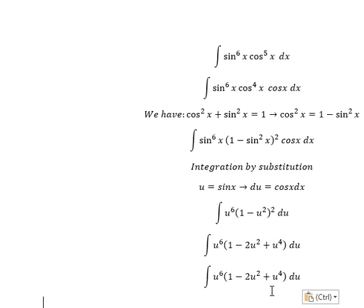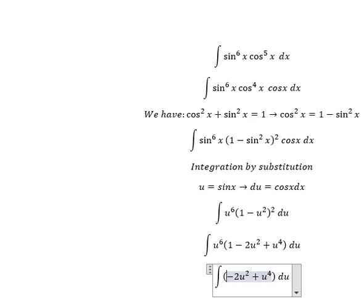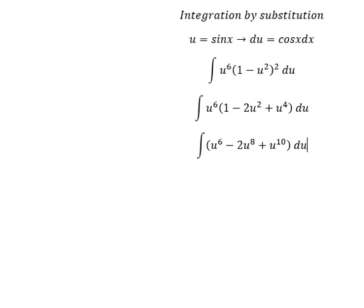So u^6 multiplied by (1 - 2u^2 + u^4). We expand to get u^6 - 2u^8 + u^10.